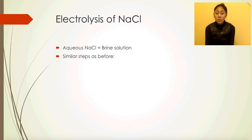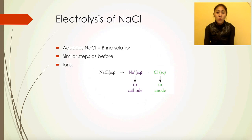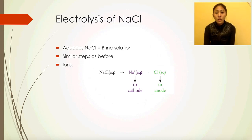It's similar steps as before. The electrolyte, sodium chloride, dissociates into sodium ions and chloride ions. Sodium ions are cations — in electrolysis, cations go to the cathode. The anions go to the anode, so the chloride ions go to the anode.